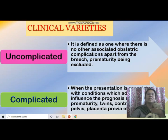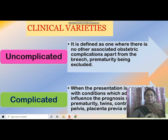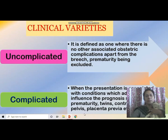The clinical varieties are uncomplicated and complicated. Uncomplicated means there is no other associated obstetric complication apart from the breech, with prematurity excluded. Complicated breech presentation is when the presentation is associated with conditions adversely influencing progress, such as prematurity, contracted pelvis, and placenta previa.